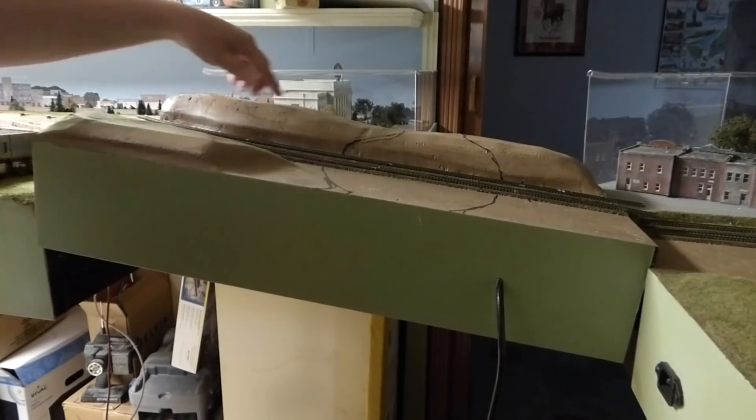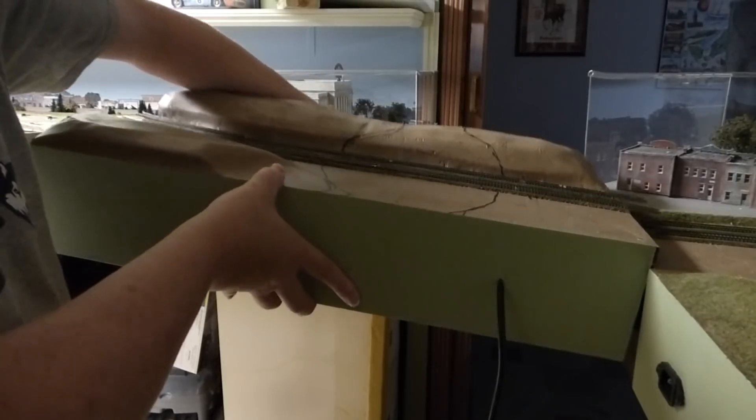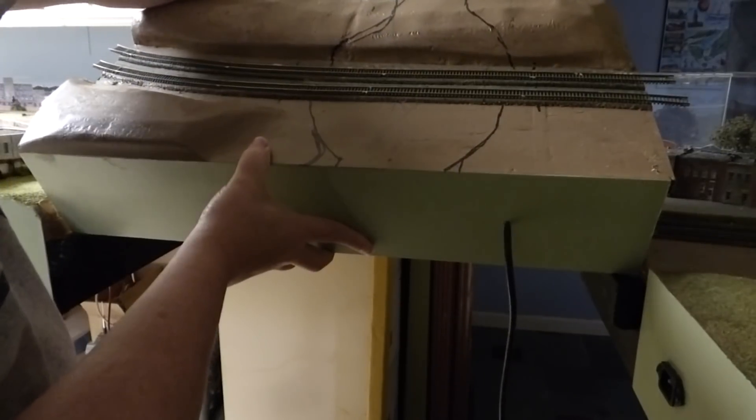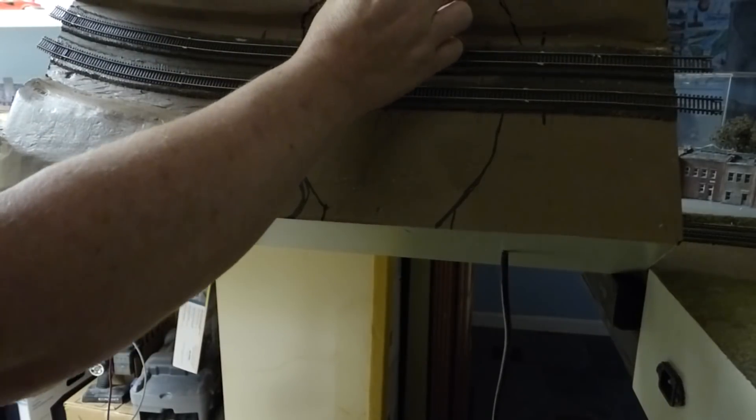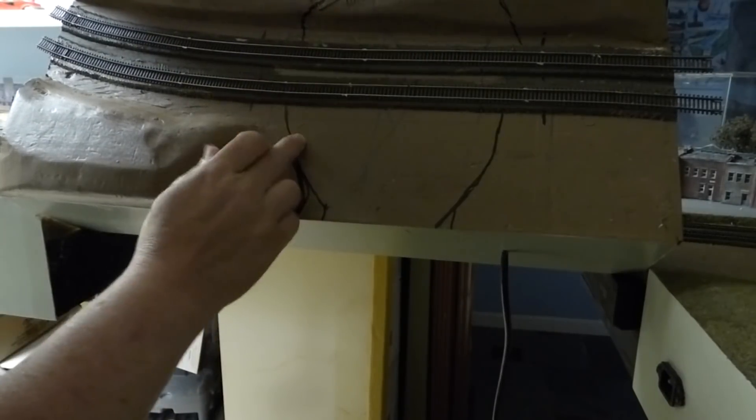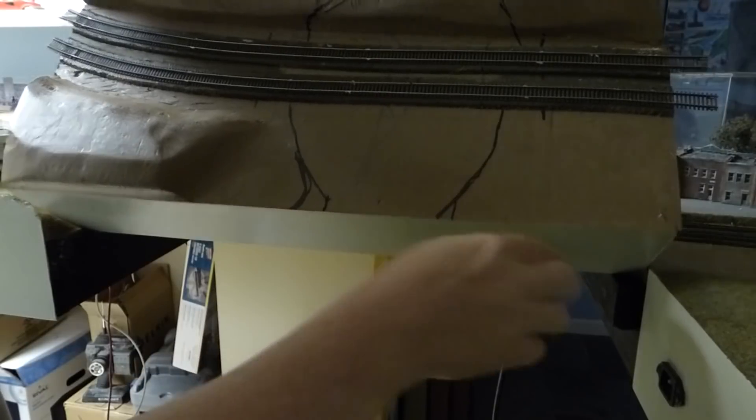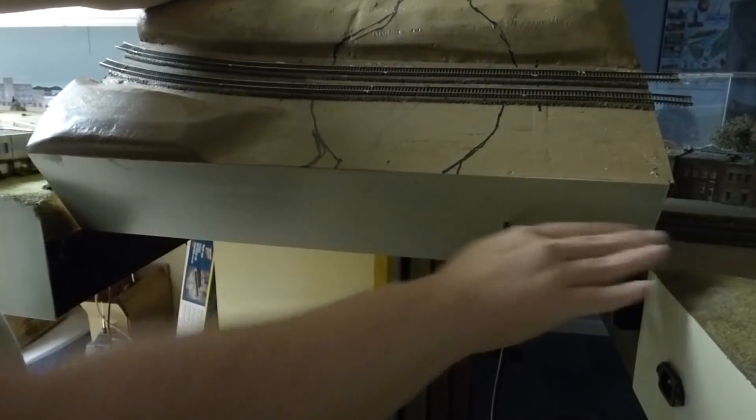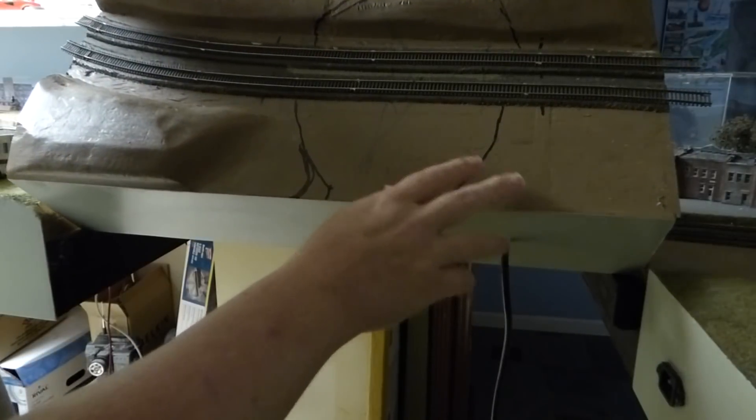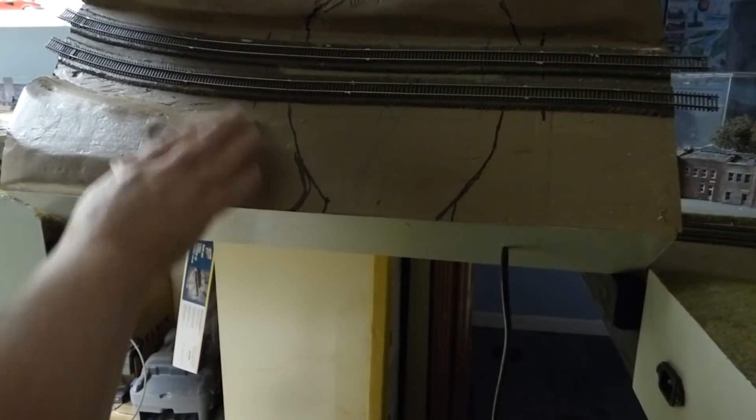But I want to do something a little different. I'm going to take this and cut the river into here with a small waterfall back here, and then I want to do a swimming area over here that will tie into the rest of the layout.